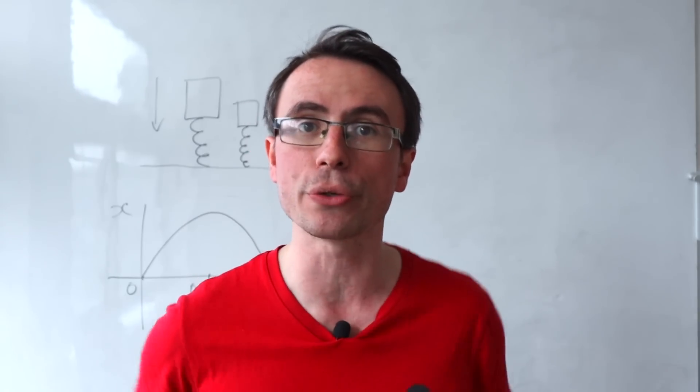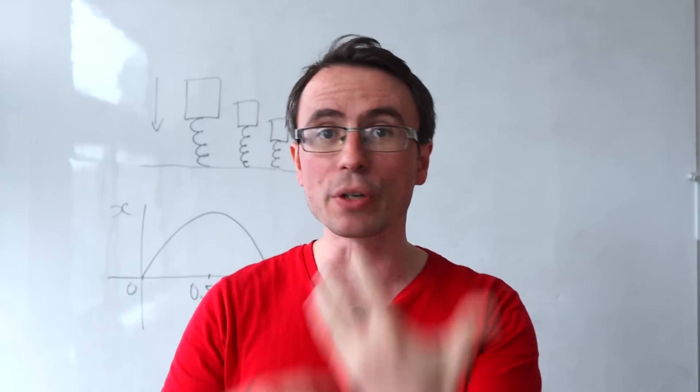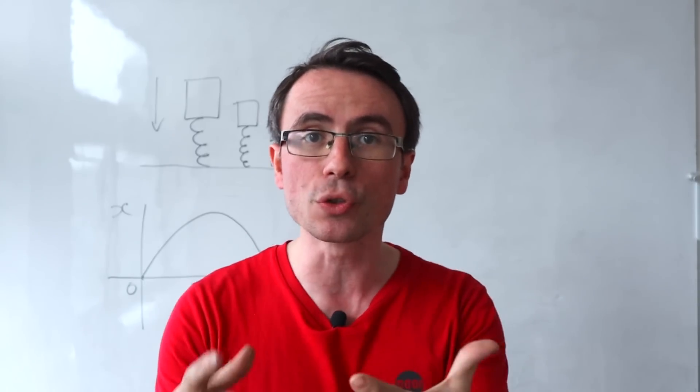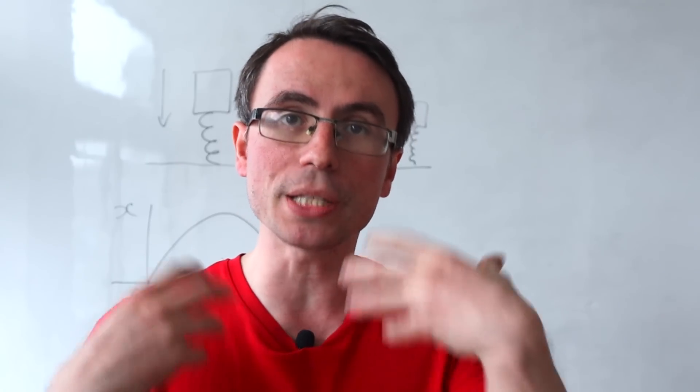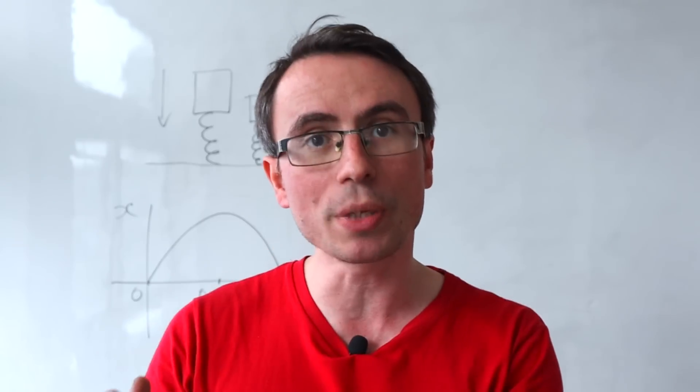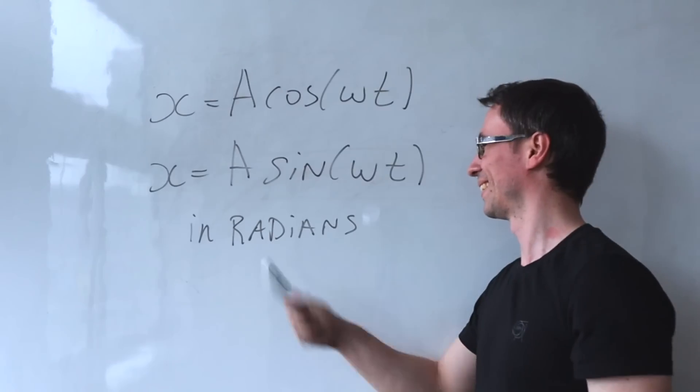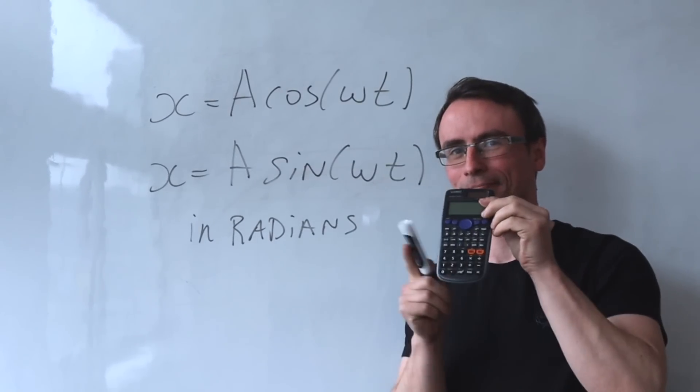For instance, lots of students might forget to carry a square term in Newton's laws of gravitational universal attraction. Another common mistake would be using the simple harmonic motion displacement equations in degree mode on your calculator. It needs to be in radians in order to use those equations.